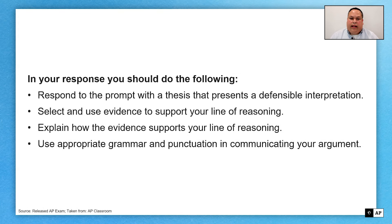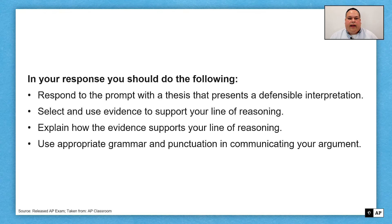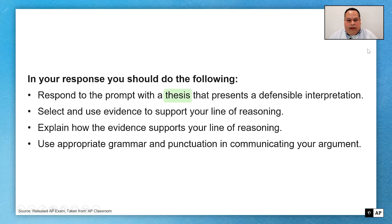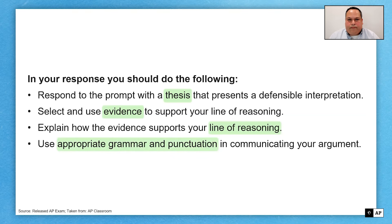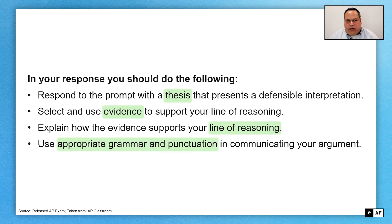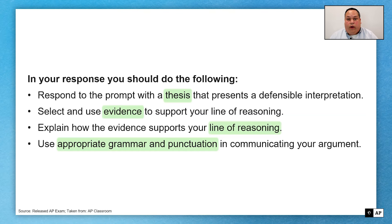These bullet points are tied to the scoring guidelines, so it's very important. Even though I'm not going to review them per se, it's important that you keep them in mind as we work through the question. These are good reminders that we need a thesis statement, we need evidence, and with that evidence and thesis statement we're going to be building our line of reasoning. Our essay must use appropriate grammar and punctuation throughout. If you're unclear about what we mean by thesis statement, evidence, or line of reasoning, go into AP Classroom and click on the AP Daily videos for those points.